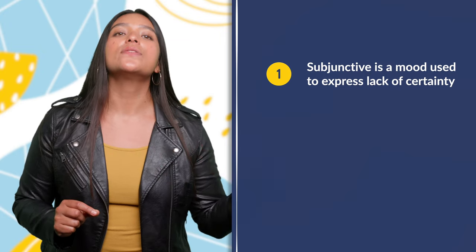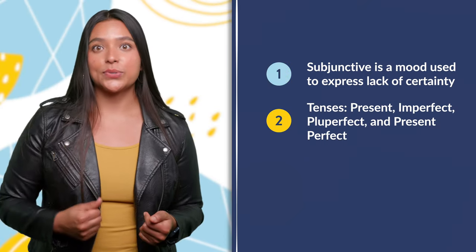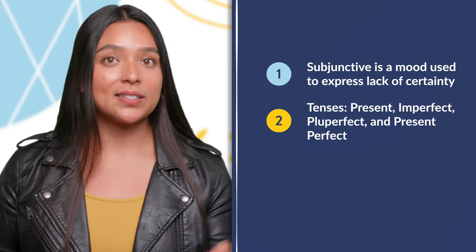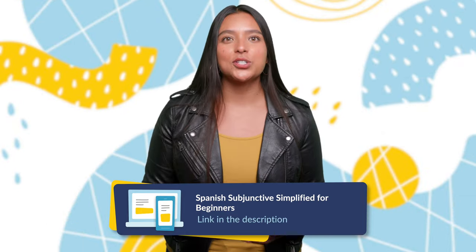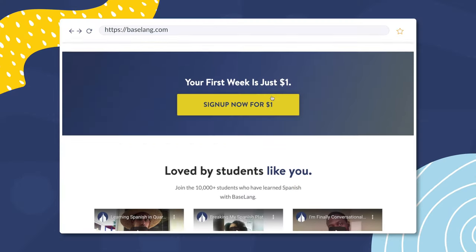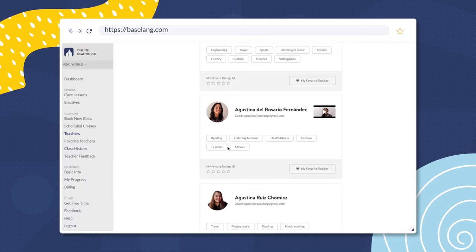That's everything you need to know about subjunctives in Spanish. Let's recap. First, the subjunctive is a mood that expresses a lack of certainty. Second, there are four tenses we can use: present, imperfect, pluperfect, and present perfect. Now you know how the subjunctive is used — why not head to our blog, link in the description below, and test your knowledge with exercises to practice what you've learned. If you want to practice the subjunctive with a Spanish teacher today, schedule your first Baselang class at Baselang.com — unlimited one-on-one Spanish classes with native-speaking teachers all via Zoom, first week for only one dollar. If you enjoyed this video, give it a thumbs up, hit subscribe, and check out our other video on the imperative mood.